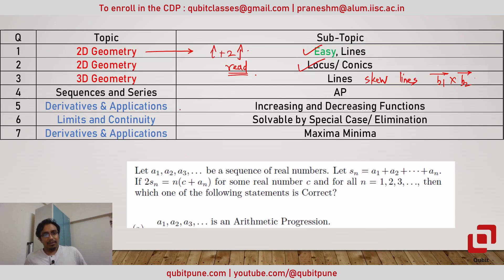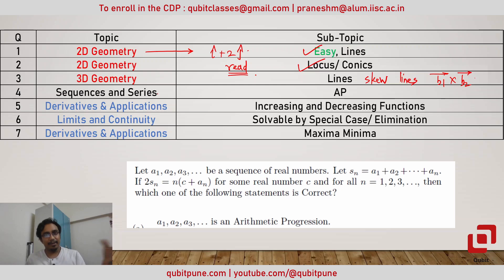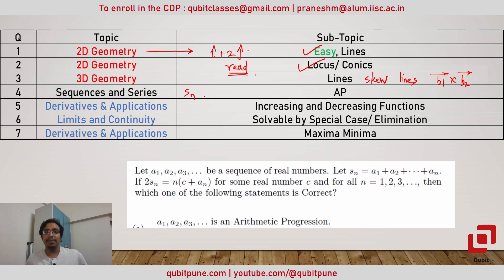In the fourth question, which was based on sequences and series, the options included AP and GP. If you had known the formula for the sum of first n terms of a GP and an AP, you could easily solve this particular problem.